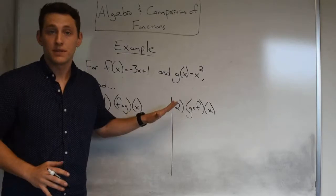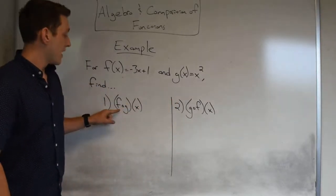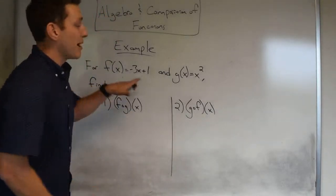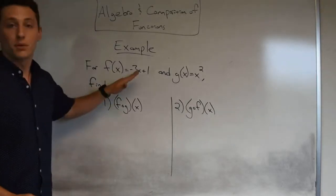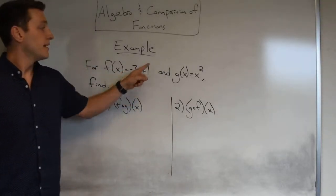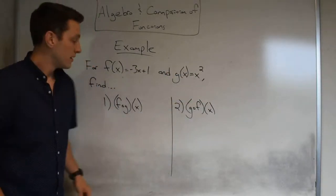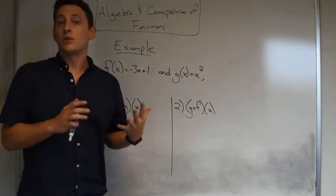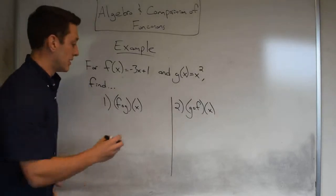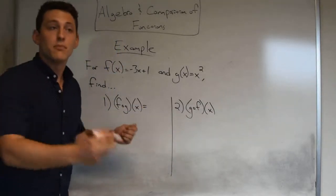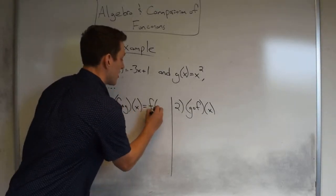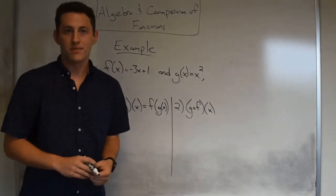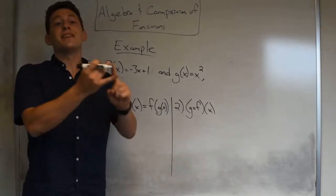Now for a composition example. For f(x) = −3x + 1 and g(x) = x squared, find f(g(x)) and g(f(x)). The first step is to translate: f(g(x)) means g is plugged in as the input of f, written as f(g(x)). From there it's a substitution and simplification game.